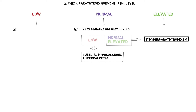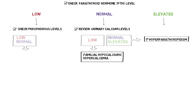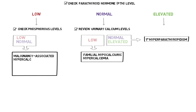If the PTH is low, the phosphorus level in the blood should be checked. A low or normal reading suggests malignancy-associated hypercalcemia, the most common cause of inpatient hypercalcemia. The two mechanisms are local osteolytic lesions if lytic bone metastases are present, and less commonly humoral hypercalcemia of malignancy, in which the tumor itself produces parathyroid-related protein.